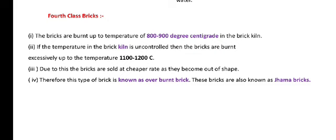Fourth class में over burnt bricks को fourth class कहते हैं। Normally bricks का temperature 800-900 degree centigrade होता है, लेकिन कई बार temperature control नहीं हो पाता — आग बहुत तेज हो जाती है जिसकी वजह से temperature 1100 से 1200 degree centigrade तक पहुँच जाता है। क्योंकि strength होती है, तो masonry work के लिए normally इनको use कर सकते हैं। इनको over burnt brick या Jhama bricks कहते हैं।